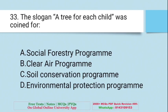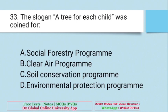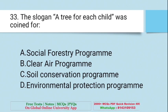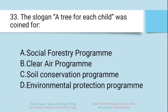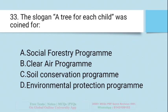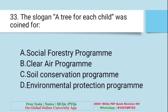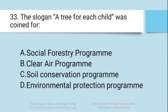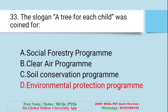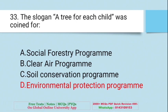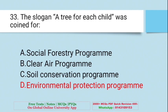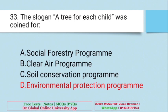Question: The slogan 'A tree for each child' was coined for — A. Social Forestry Program, B. Clean Air Program, C. Soil Conservation Program, D. Environmental Protection Program. The right answer is D — Environmental Protection Program. This slogan was coined for the Environmental Protection Program.